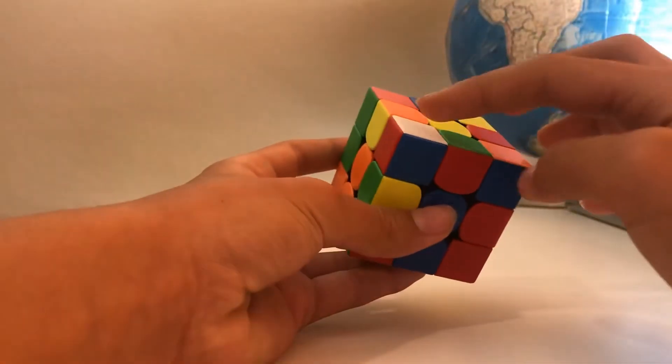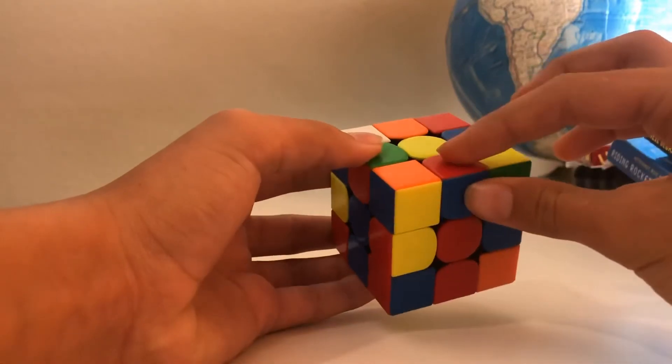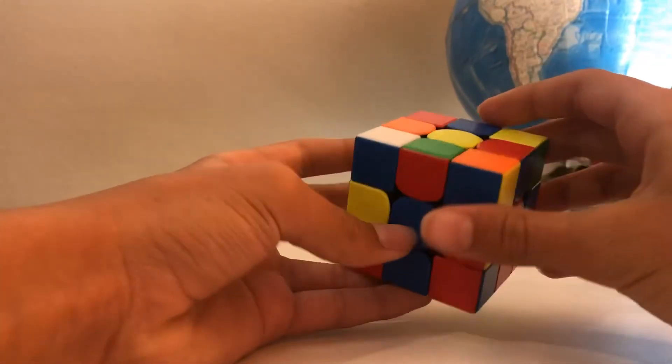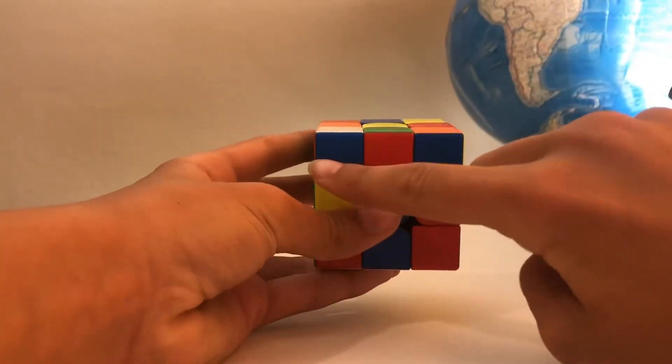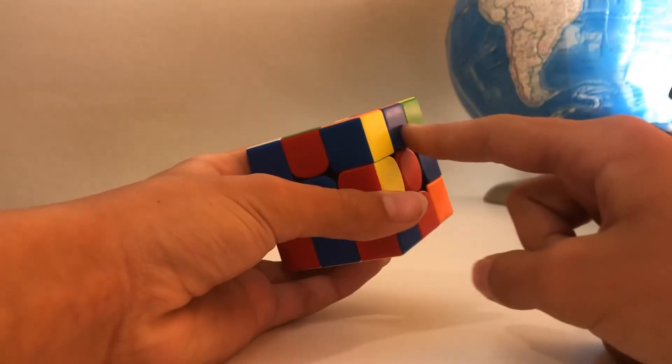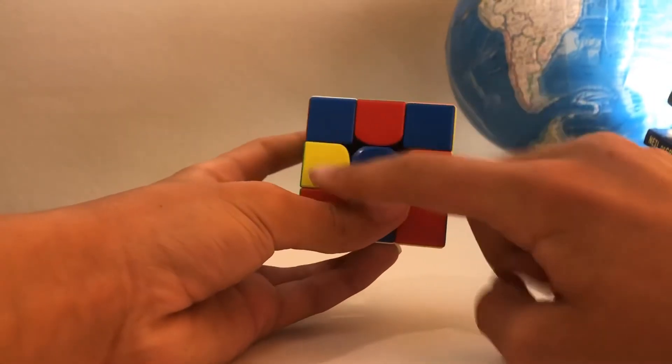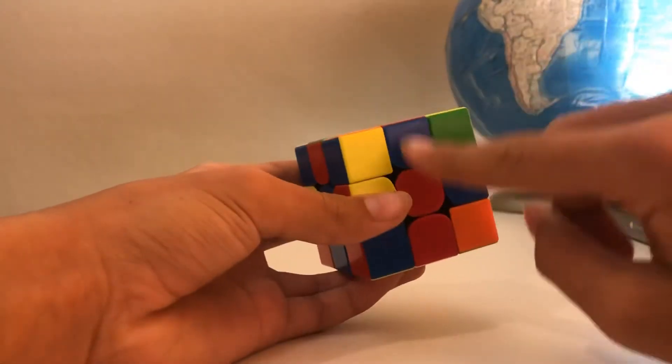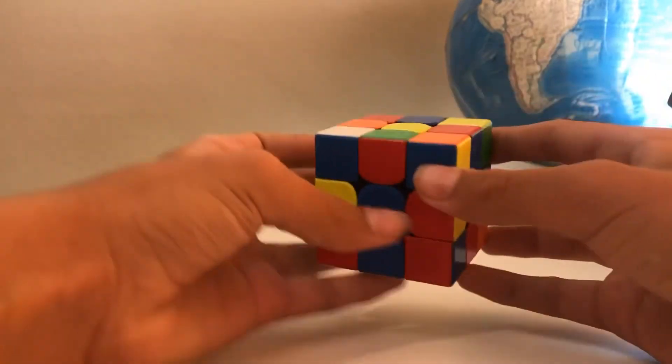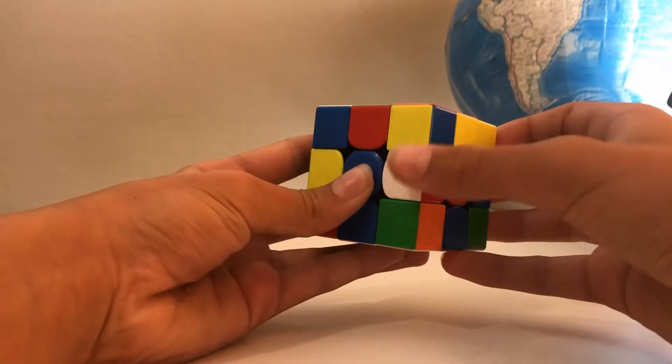So the first case is when your corner is in the top left and your edge is right here, and the first thing you want to look at is what color on that corner is facing you and what color is the edge in the same layer. And if they are the same color, so for example blue and blue, you'd move the edge towards you. And if they aren't the same color, you'd move the edge away from you.